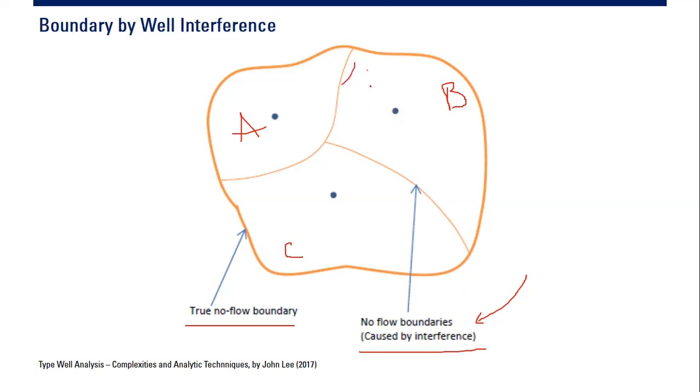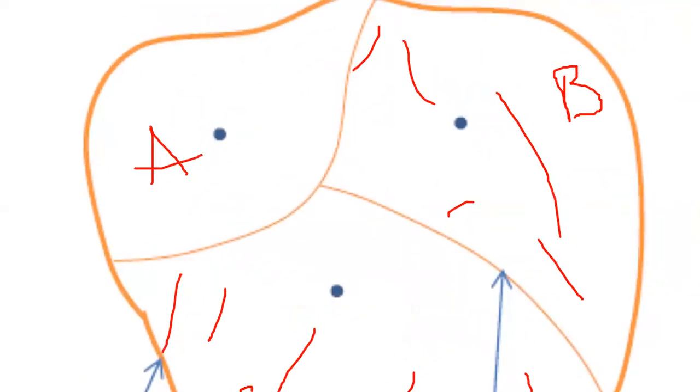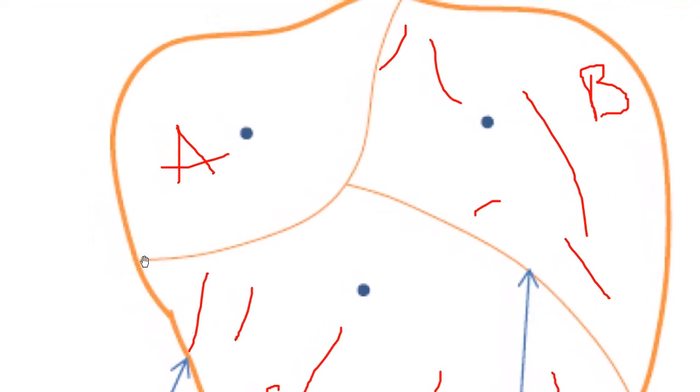This well will only drain what happens inside A, and so on and so forth. This well will drain everything here, and this well will drain everything here.